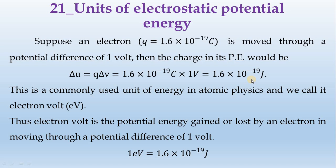In atomic physics, the electron volt is used. One electron volt is equal to 1.6 times 10 to the power minus 19 joules. So electron volt and joule represent the same energy — one electron volt is equal to 1.6 times 10 to the power minus 19 joules.